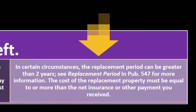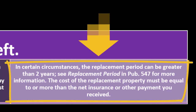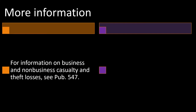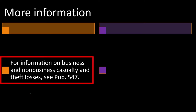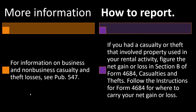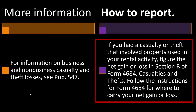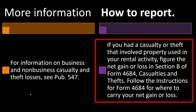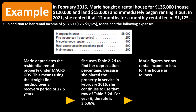The cost of replacement property must be equal to or more than the net insurance or other payment you received. For information on business and non-business casualty and theft losses, see Publication 547. If you had a casualty or theft involving property used in your rental activity, figure the net gain or loss in Section B of Form 4684, Casualty and Thefts, and follow the Form 4684 instructions for where to carry your net gain or loss.